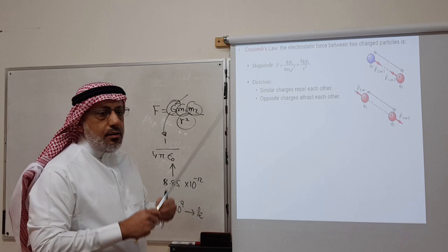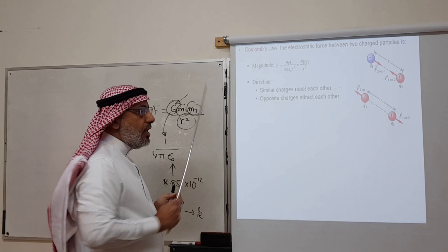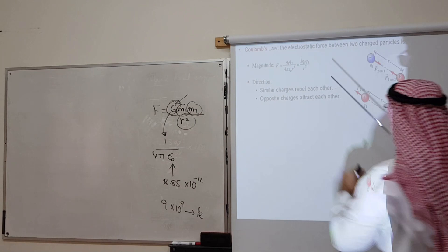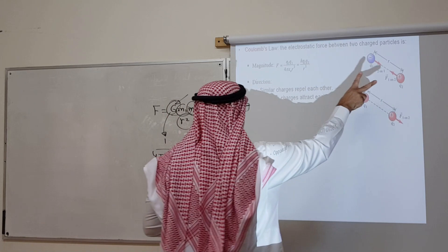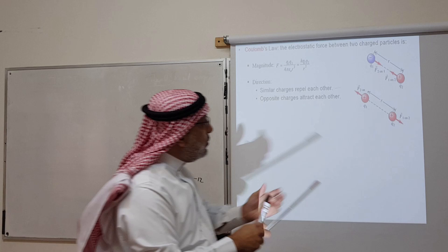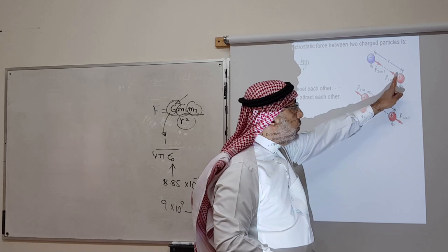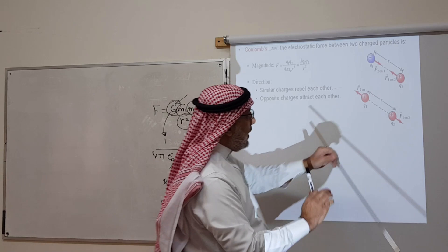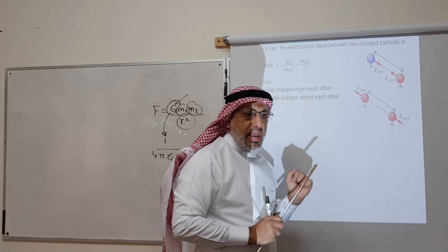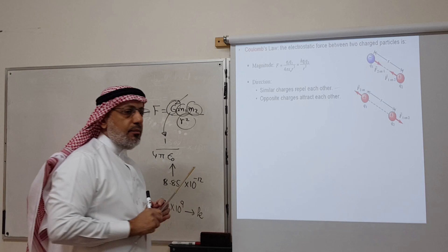Unlike gravity, which is always attractive, the electrostatic force can be attractive or repulsive. The force acts along the line joining the two particles. If the charges have opposite signs, the force is attractive; if they have the same sign, it is repulsive. The magnitude in both cases is given by k times q1 times q2 over r squared.